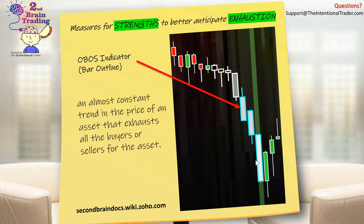The next indicator is our OBOS indicator, or overbought/oversold indicator, which I showed you indicating a strong push in the previous video. We use that on the actual bar itself and we paint the outline of the bar to show us when we have an overbought or an oversold condition. You can tune the color and whether you want an outline or another indicator to display whether you have an overbought or oversold condition.